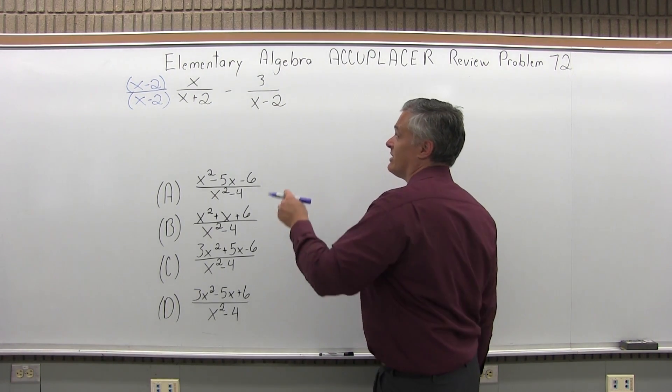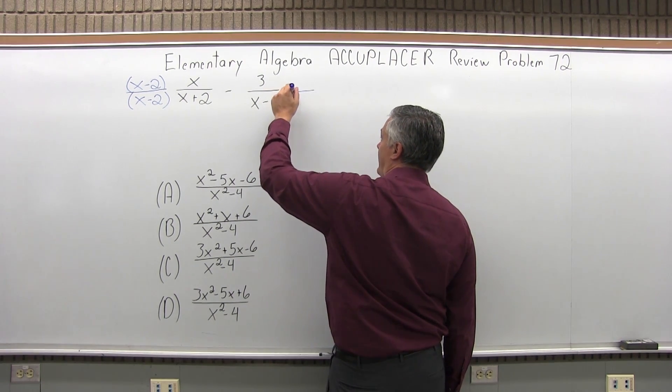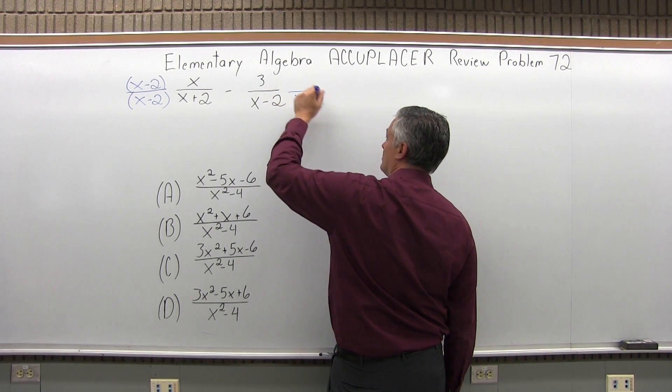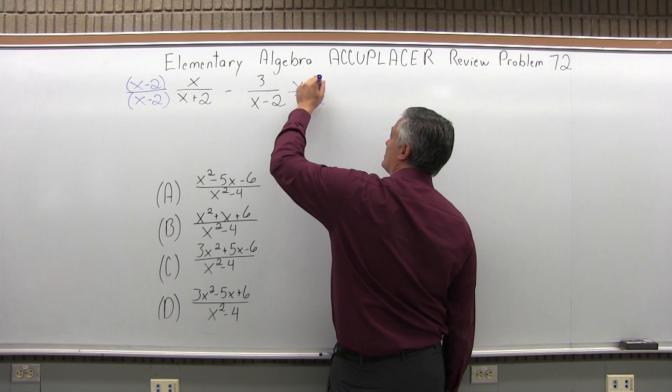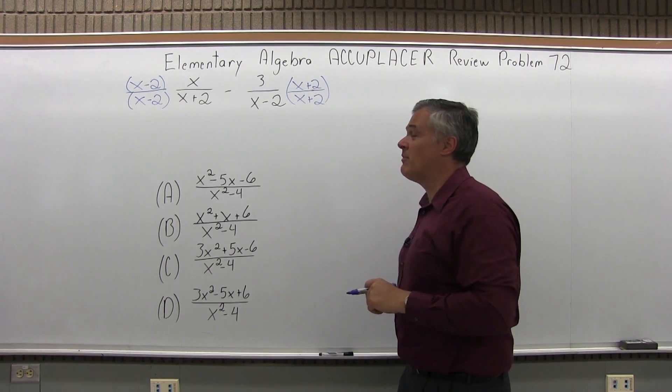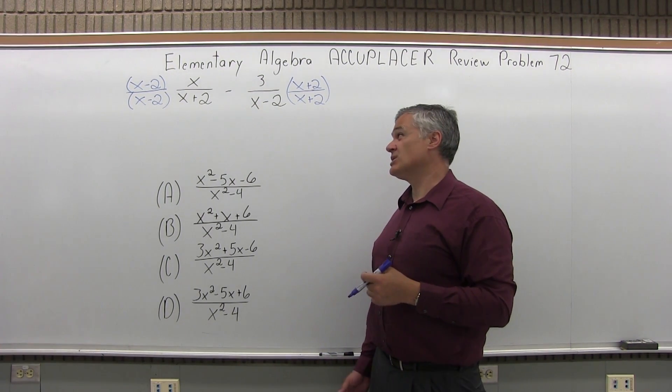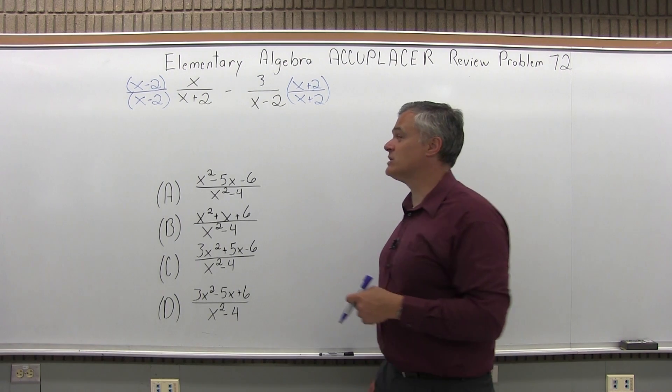Now the second fraction that has an x minus 2 as the denominator, I'm going to multiply that times x plus 2 over x plus 2. Again, I'm multiplying times essentially a funny looking 1. By multiplying times 1, I'm not going to change its value. I'm just going to change the way it looks. So let's go ahead and do those multiplications.